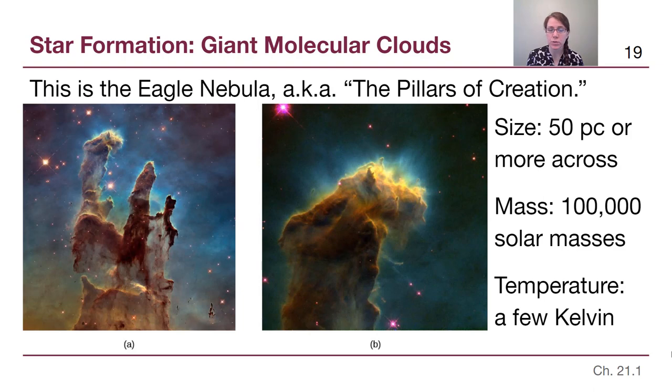Now, the overall giant molecular cloud is enormous, so these objects are 50 parsecs or more across. Now, we haven't really used that unit that much, so I want to make sure we understand what that means. About one parsec is about three and a third light-years. The very closest star to us, from the Sun to the closest star, is 1.3 parsecs.